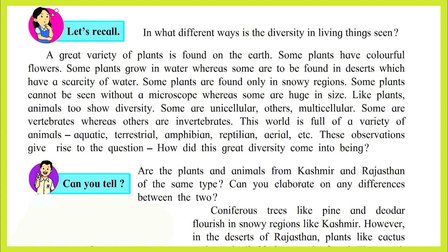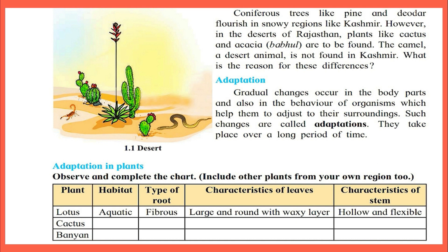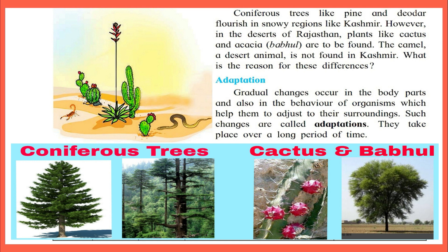These observations give rise to the question: how did this great diversity come into being? Can you tell — are the plants and animals from Kashmir and Rajasthan of the same type? Coniferous trees like pine and deodar flourish in snowy regions like Kashmir. However, in the deserts of Rajasthan, plants like cactus and acacia (babul) are found. The camel, a desert animal, is not found in Kashmir.